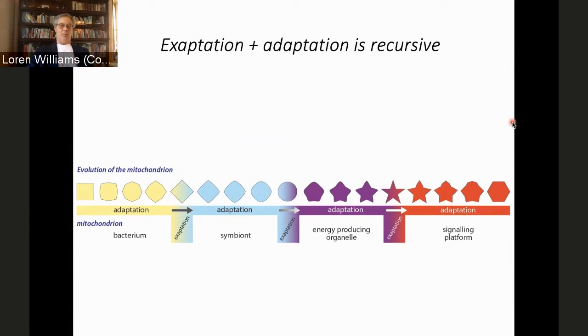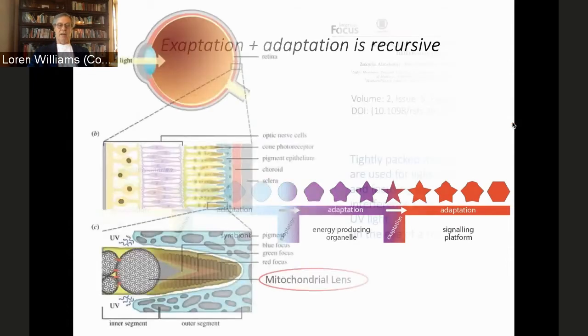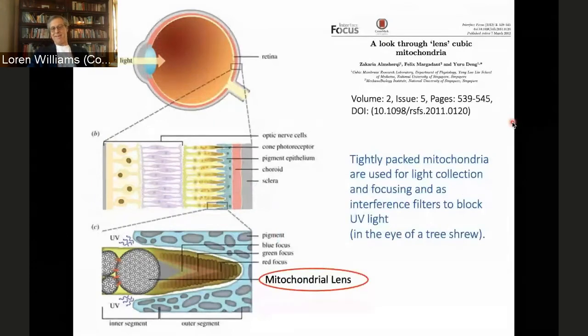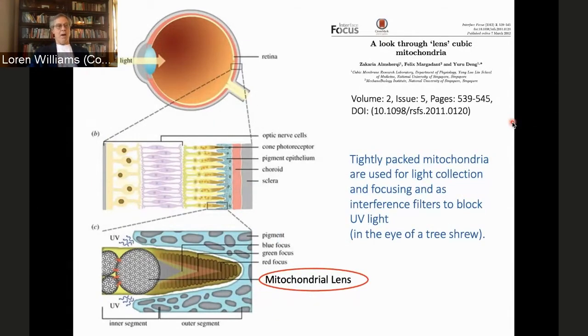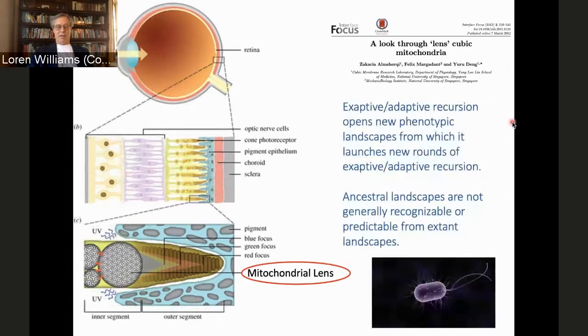This is what I think is the wildest thing. If you look in the eye of a tree shrew, this is a fantastic story. You can see that mitochondria have been closely packed to form lenses. And these lenses are used for interference to block UV light and to focus and to collect light. And there's actually even some other independent systems where mitochondria have become closely packed to manipulate light in worms and things like this. So this shows you how creative this process can be. You know, you go one place, you start where you end, and you go again, and you go again. And in the end, you're so far away from where you started.